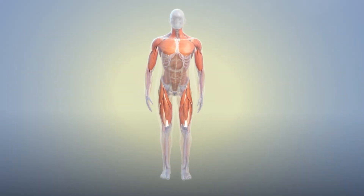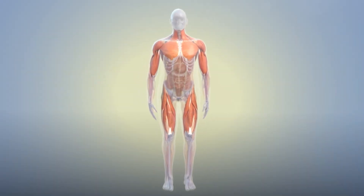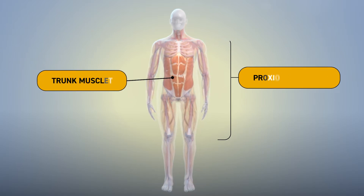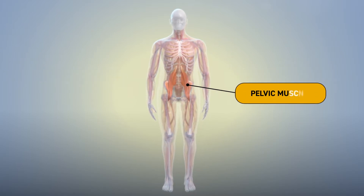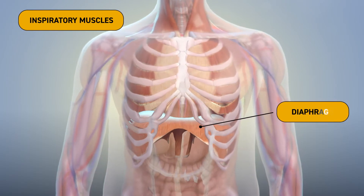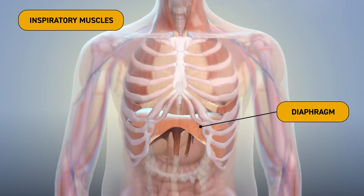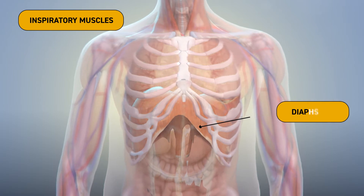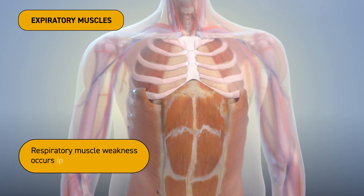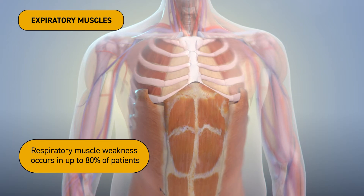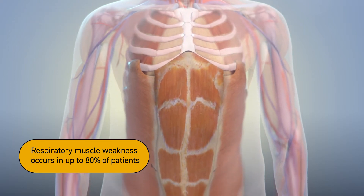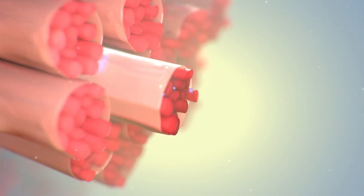In late-onset Pompe disease (LOPD), progressive weakness in the proximal trunk and pelvic muscles can significantly affect mobility. Progressive weakness also occurs in the diaphragm and other respiratory muscles, affecting a person's ability to breathe. Respiratory muscle weakness occurs in up to 80% of patients, with respiratory failure being the most common cause of death.